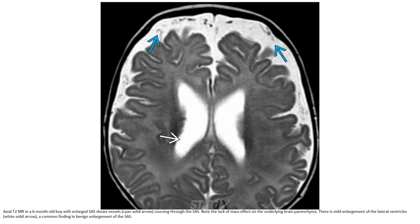This is a T2 MRI in a six-month-old boy with large subarachnoid spaces. Note the vessels coursing through the subarachnoid spaces and the absence of mass effect on the underlying brain. Mild lateral ventricular enlargement is a common finding in benign enlargement of subarachnoid spaces.